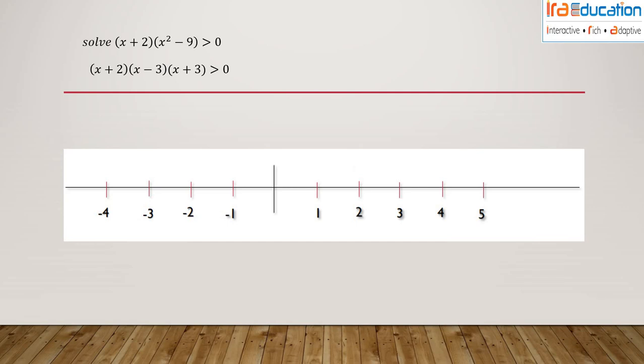So I plot these roots on the number line: -2 here, then +3, and then -3. Once I get these three node points on the number line, I can create intervals.